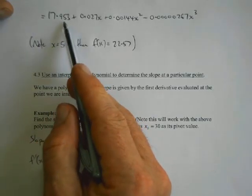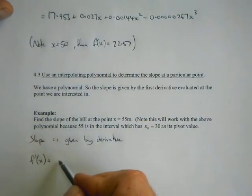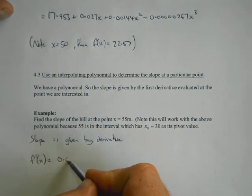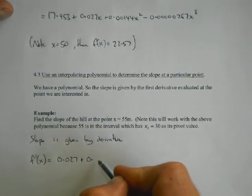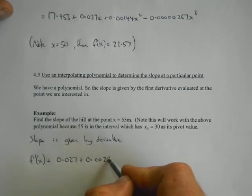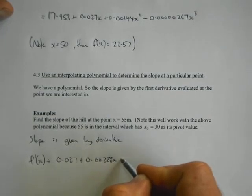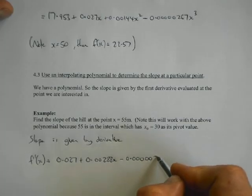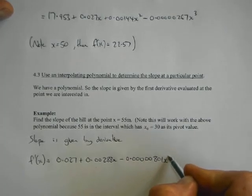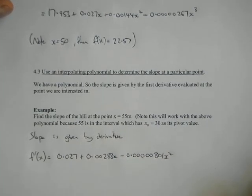f dash of x, well the 17.95 goes away, we're going to get 0.027 plus two lots of 0.01 minus 0.0288x minus 0.00...how many zeros on that thing? Five, four, five, and three lots of 267 is 801x squared. Okay, so that's the derivative.